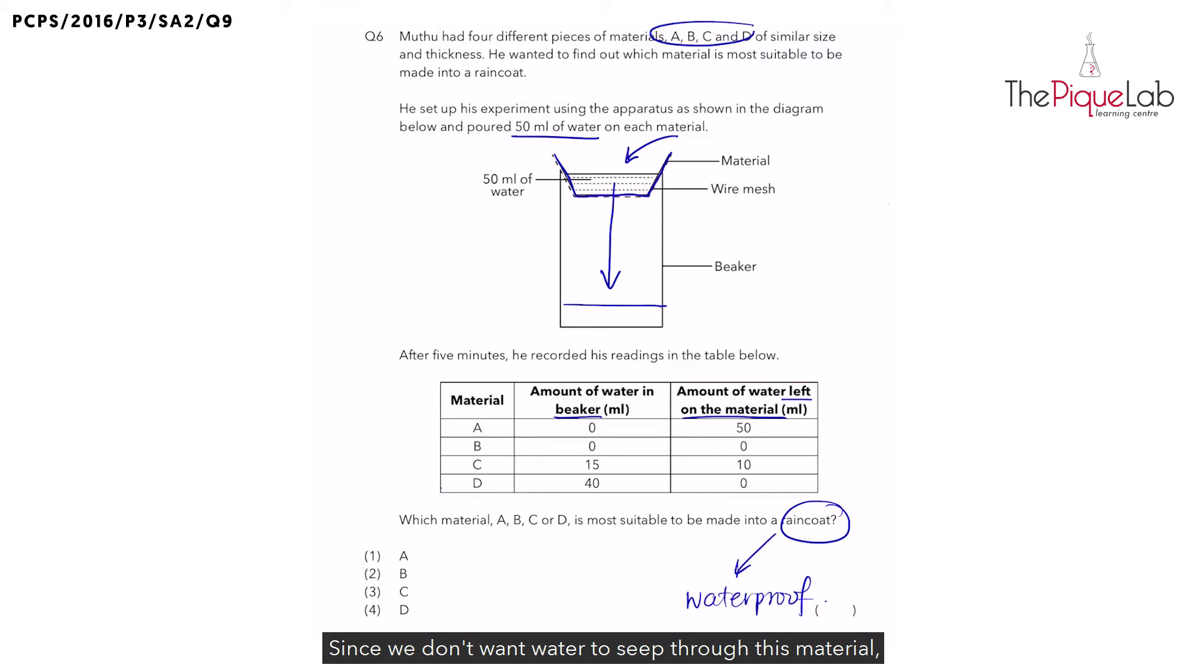Since we don't want water to seep through this material, should we see any water collected in the beaker? We should see no water collected. So let's focus on this part of the table here: amount of water inside the beaker. Remember, since we do not want to see any water collected, we should actually be looking at 0ml in our table. So which is the one that has 0ml? It is A and B.